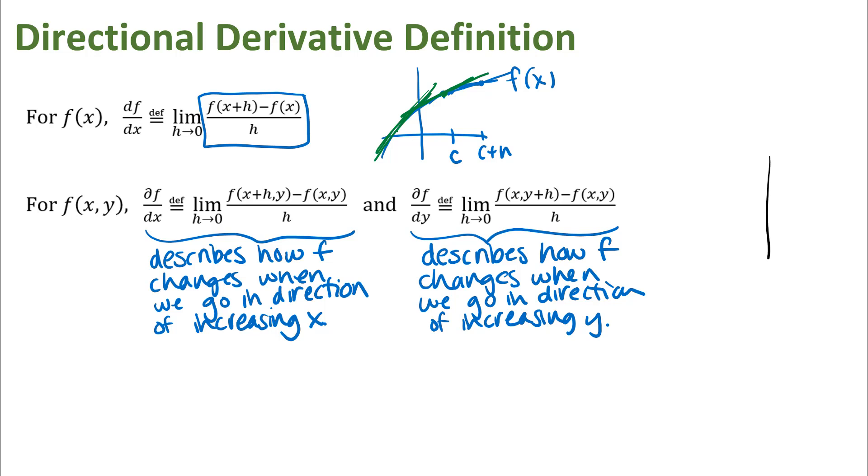Just to draw a little picture out here to the side to make sure we understand what we're thinking about when we think about these partial derivatives. So in x, y, z coordinate system, we have some surface given by z equals f of x, y.